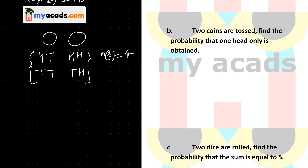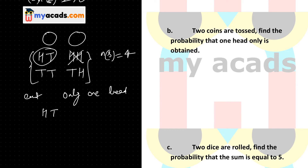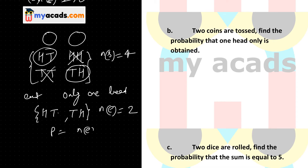The event is that only one head is obtained. HH has two heads, so it doesn't count. TT has two tails, so it doesn't count. The outcomes HT and TH each have exactly one head, so NE is 2. The probability is NE by NS, which is 2 by 4, simplifying to 1 by 2.